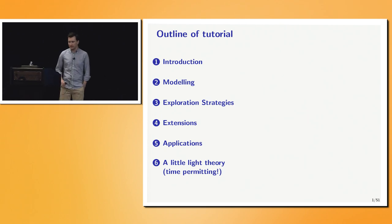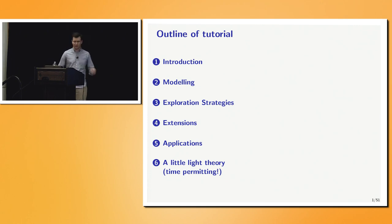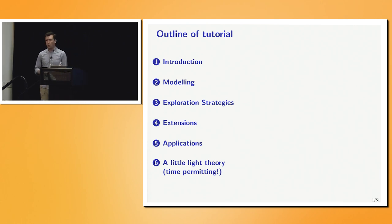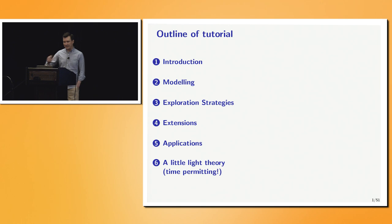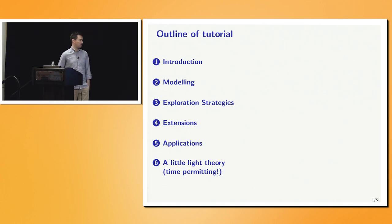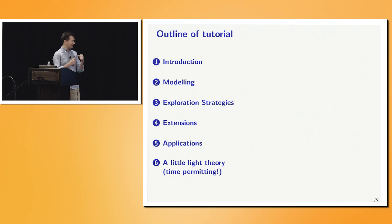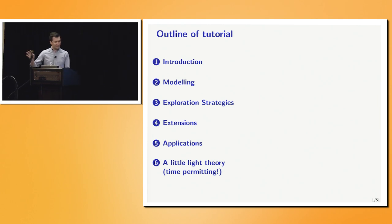The outline of what I'm going to do is first give a brief introduction of the problem we're trying to solve — the black box optimization problem. The next two sections will deal with the meat of Bayesian optimization: building a model of the objective function and, given that model, how we explore the input space. I'll then get to some extensions, some interesting applications, and if time permits, a little bit of theory to end the tutorial.